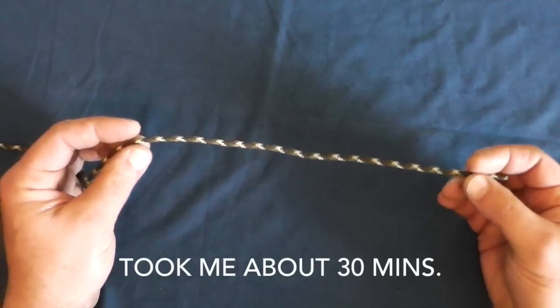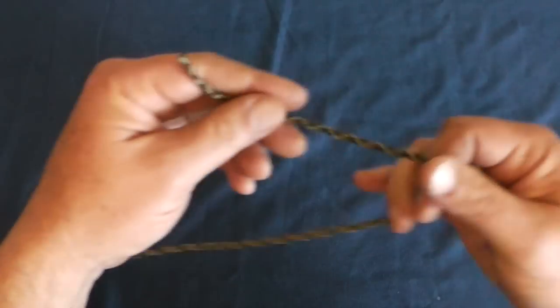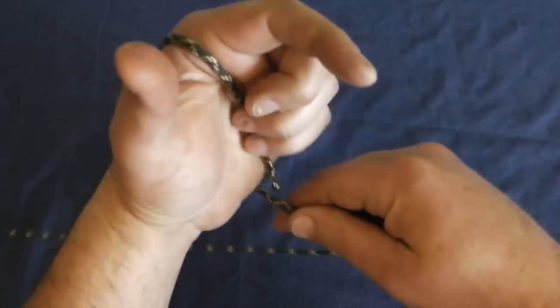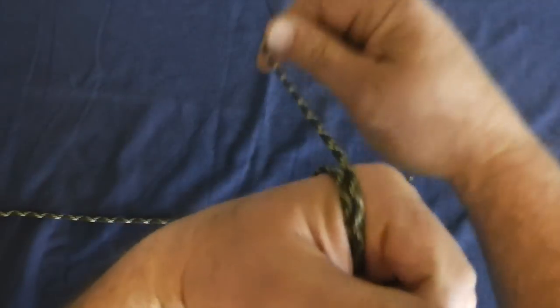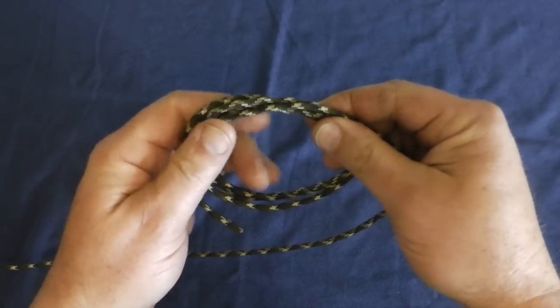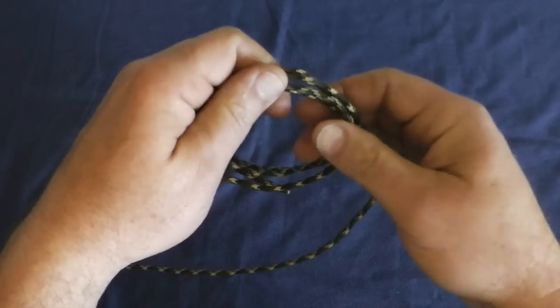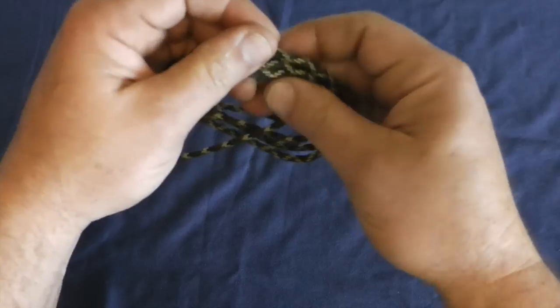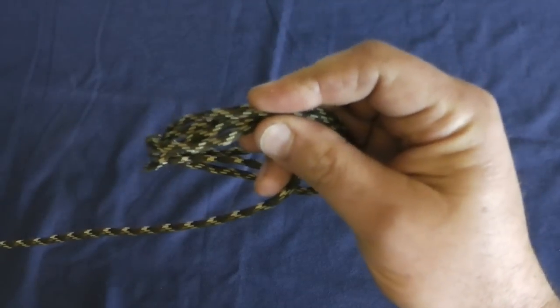Because I have big hands, the way I always start this out is I take the piece of paracord and I wrap it around my hand four times. Once I have it around my hand four times, I pick a spot where I want to start. In this case I always like to start right where the beginning of the paracord is.